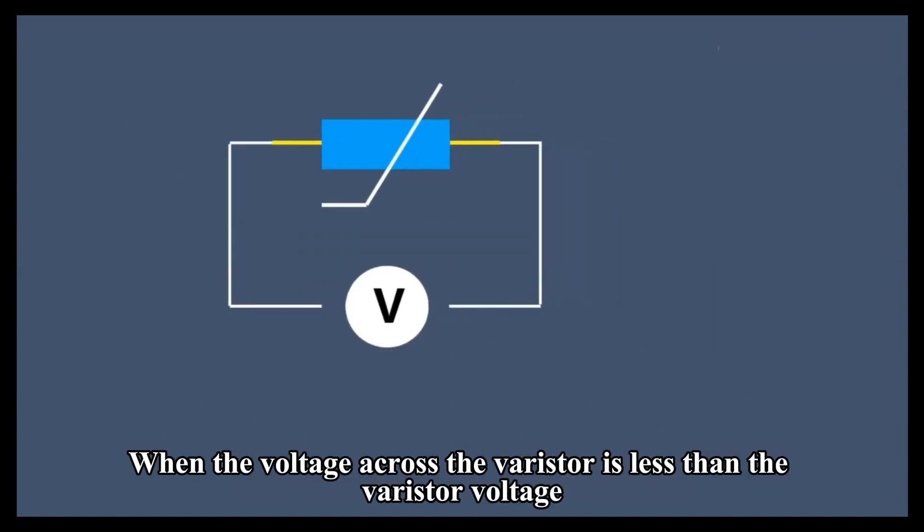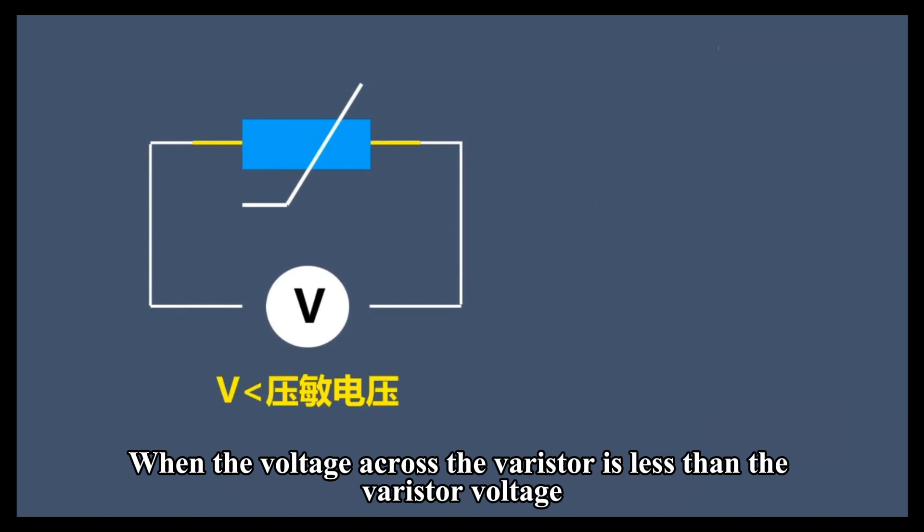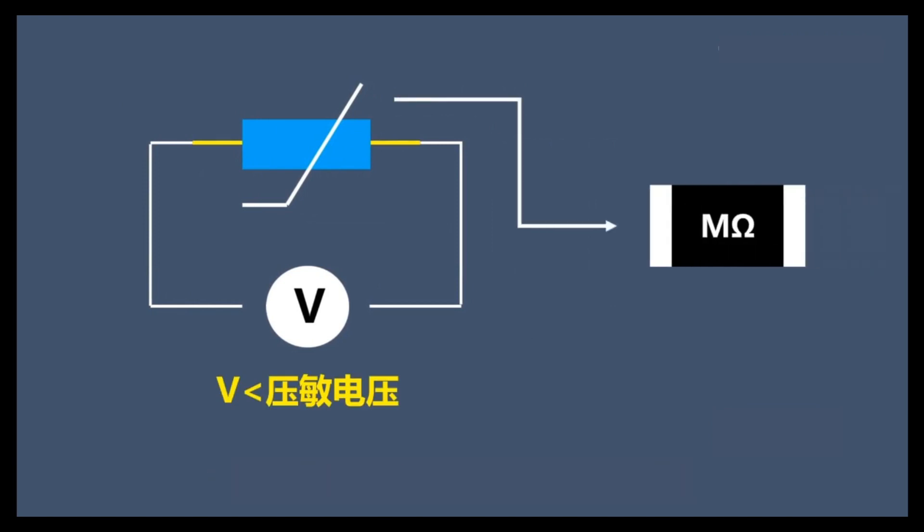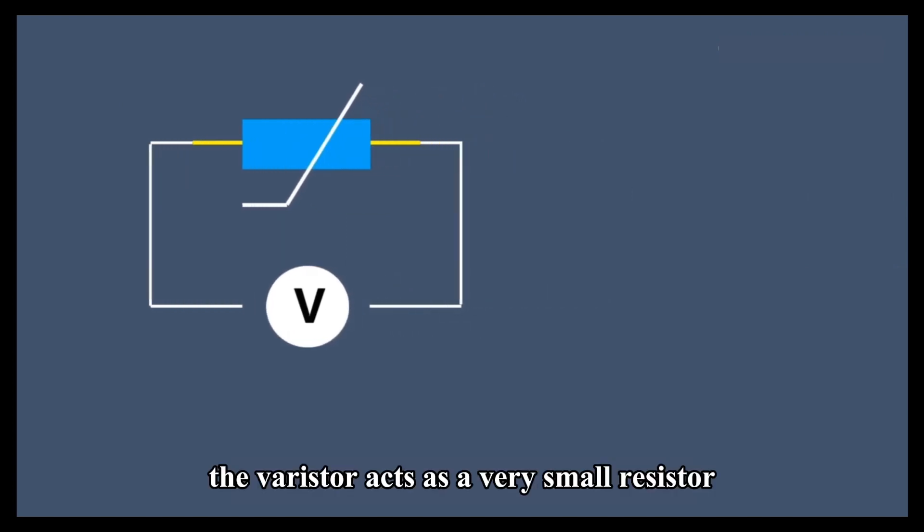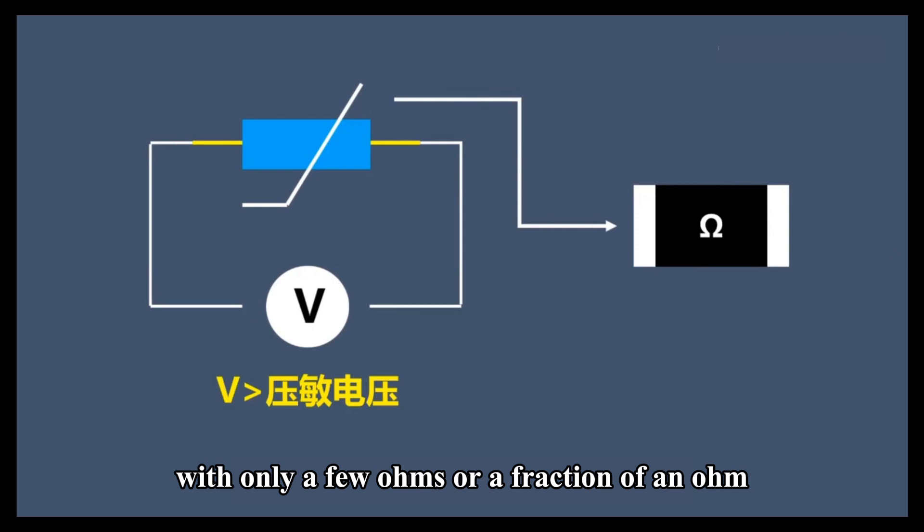When the voltage across the varistor is less than the varistor voltage, the varistor acts as a very large resistor. When the voltage across the varistor is greater than the varistor voltage, the varistor acts as a very small resistor, with only a few ohms or a fraction of an ohm.